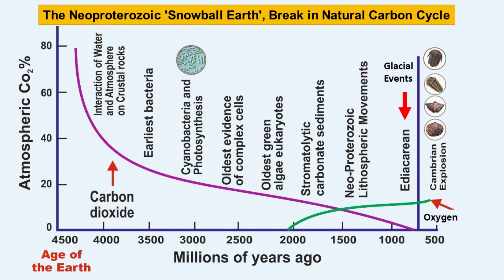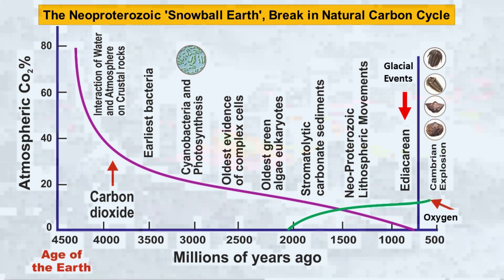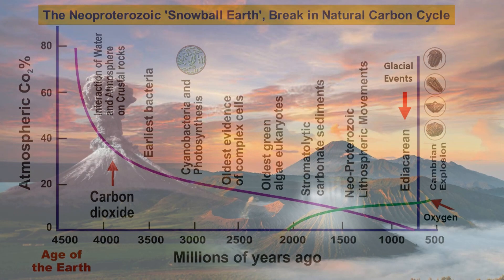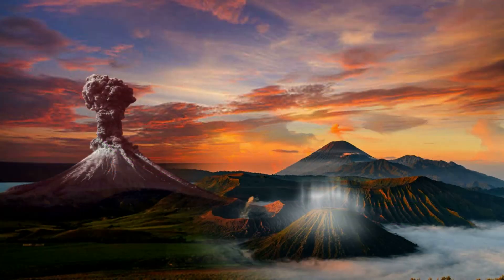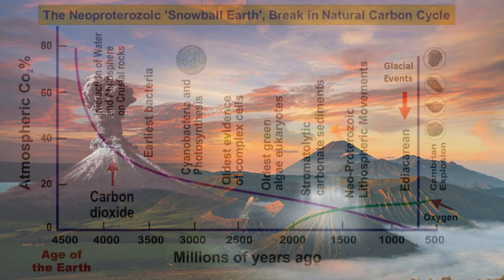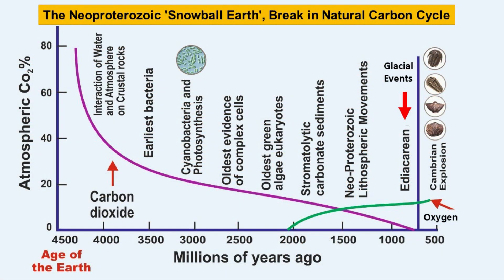The tectonic and volcanic events of the entire Cryogenian period were also supportive to the growth of blue-green algae, which established the redox potential of the shallow and deeper oceans.